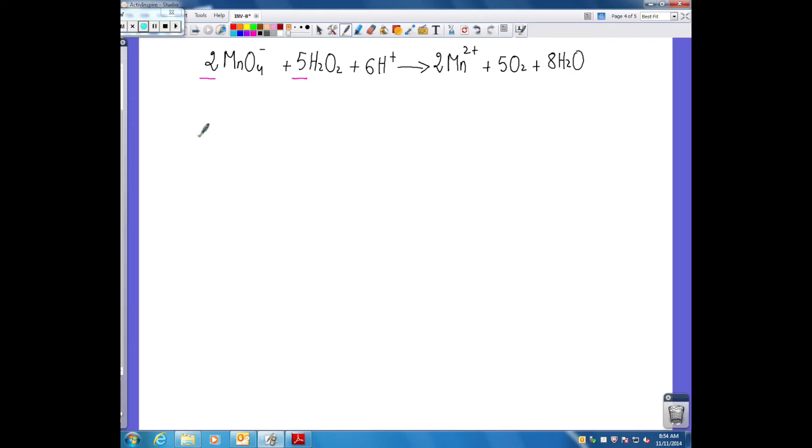Based on stoichiometry we can write 1/2 number of moles of MnO4- equals 1/5 number of moles of H2O2. Instead of number of moles, I can use molarity times volume for MnO4- and similarly for H2O2.